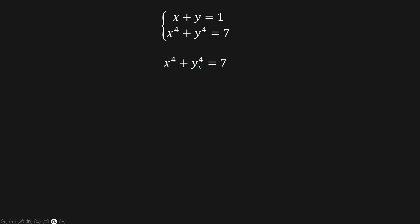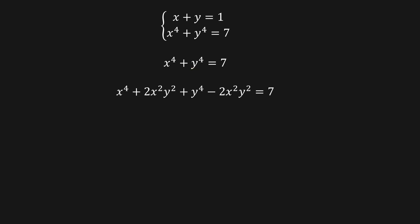First of all, let's work on the second equation of this system. I'm going to complete the square here. I want to complete this square, so I'm going to add these two x-squared y-squared terms, and then take out the same thing. So from here, we know that this is a perfect square.